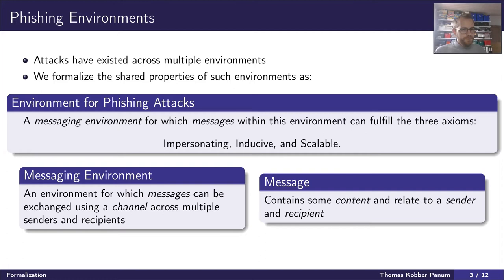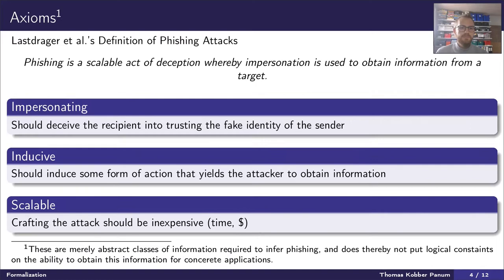Phishing attacks have existed across multiple environments, particularly email and websites have been in high presence. We define an environment that can host phishing attacks as a messaging environment, for which messages within this environment can fulfill three actions. A messaging environment is basically an environment in which messages can be exchanged across some channels using multiple senders and recipients. A message is simply something that can contain some content and relate to a certain sender and recipient.